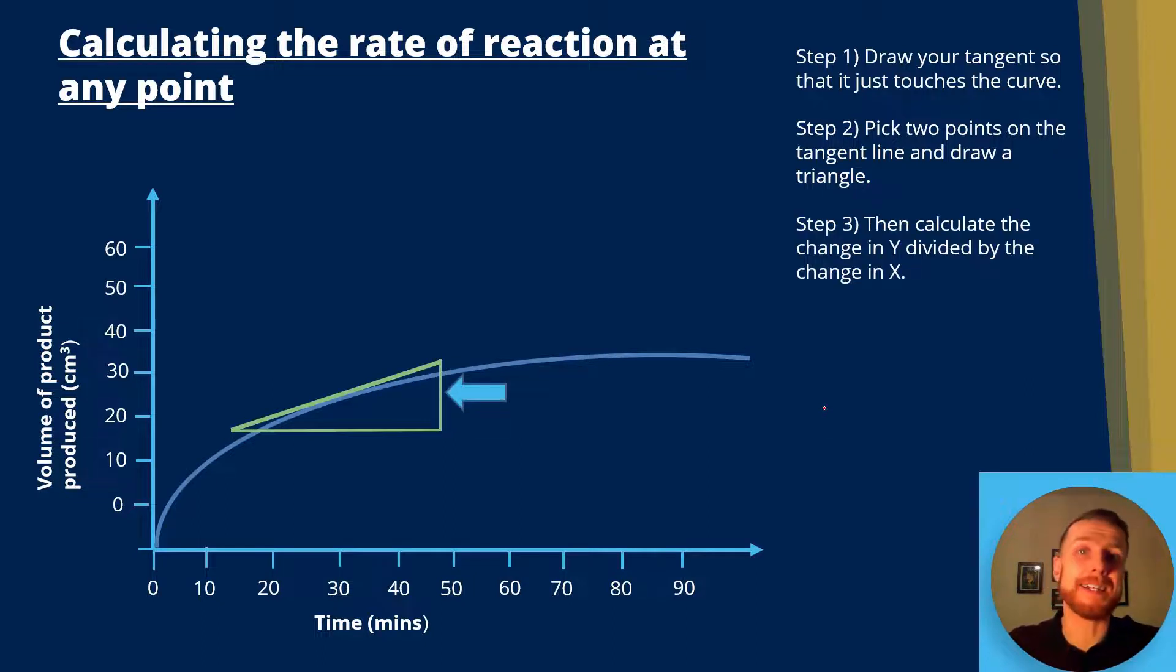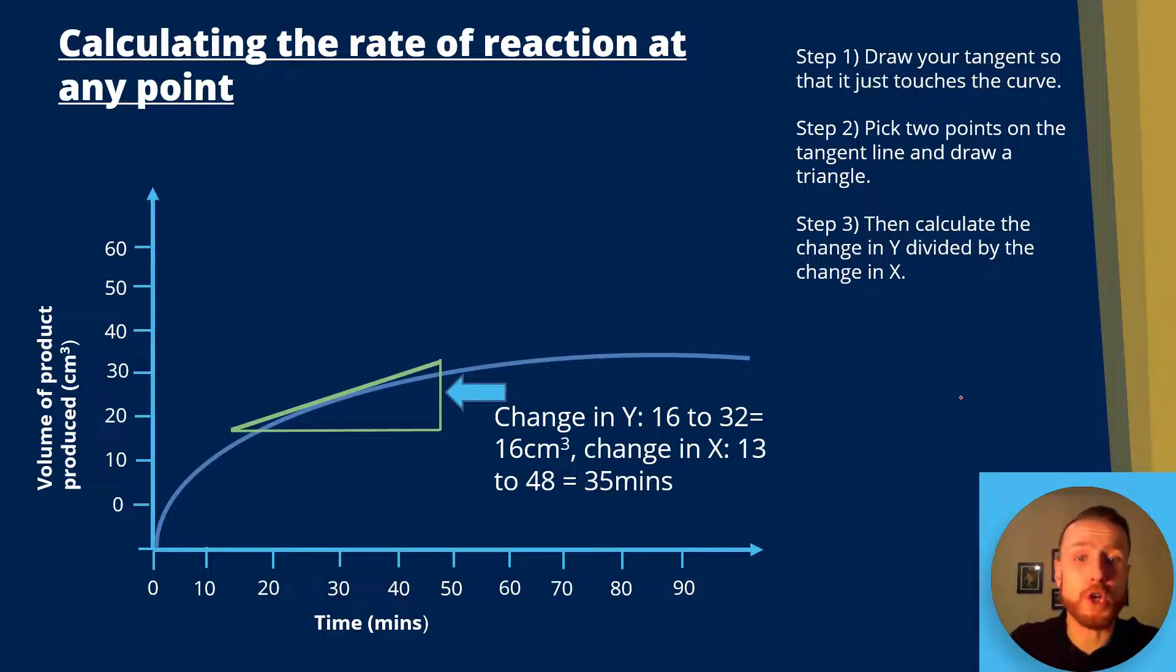Next, we're going to calculate the change in y and divide that by x. So I've got my change in y, which is 16 to 32. So if we go across here, we've got around 16 there, all the way up to 32 there. And you can just take your ruler in the exam and draw across. Obviously, I'm just doing it rough with my pen just to show you how to do it. And you can look and you can see the change in y. Remember, it's change in y, it's not y. We're not doing 32. We're doing 16 to 32. And the difference between these two points is 16 centimeters cubed.